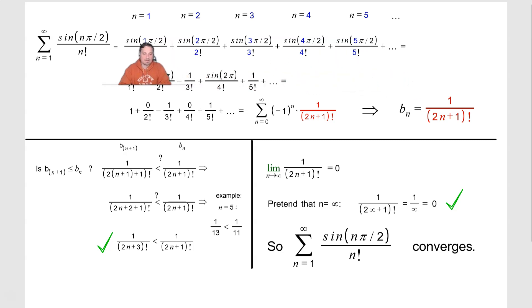Let's simplify some of these. First of all, sine of pi over 2 is just 1, so that's 1 over 1 factorial. Now this is going to be 2 pi over 2. The 2 in blue and the 2 in black will cancel off. You're going to have sine of pi over 2 factorial.